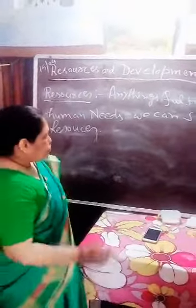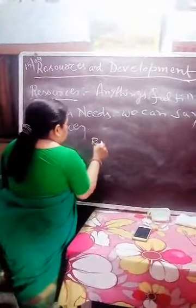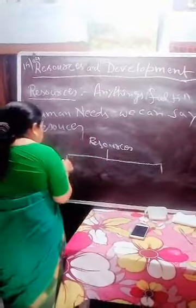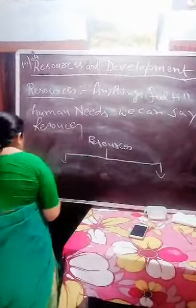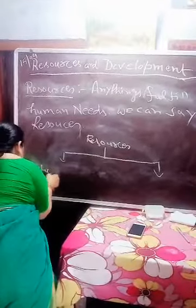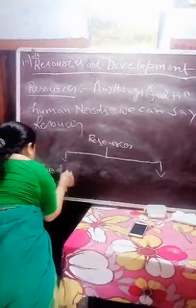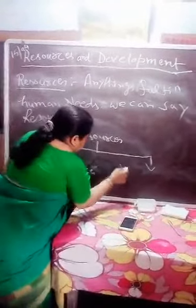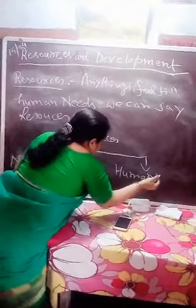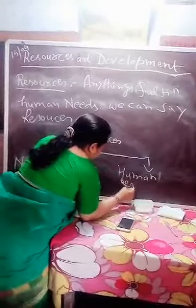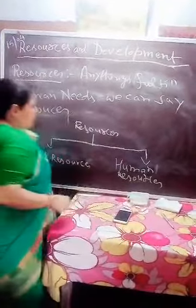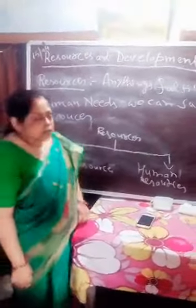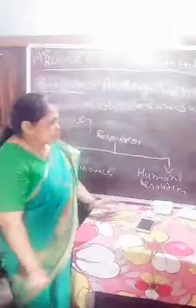Resources are two types: natural resources and human resources. Natural resources are those resources obtained from nature.